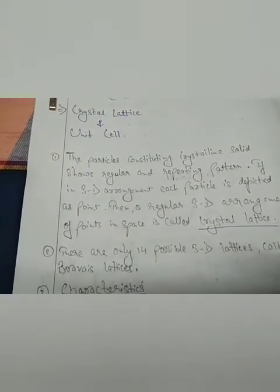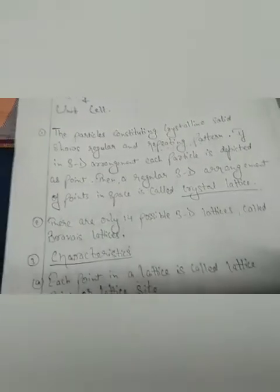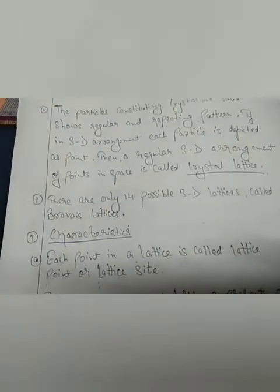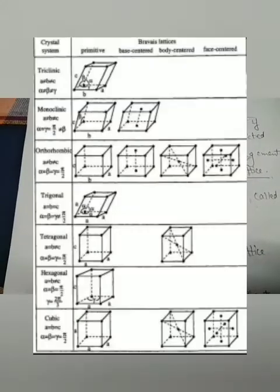The constituting particles can be atoms, molecules, or ions. There are only 14 possible 3D lattices, called Bravais lattices.